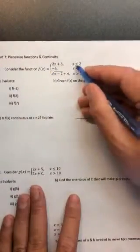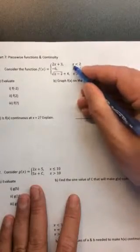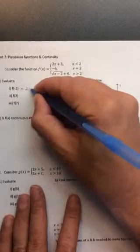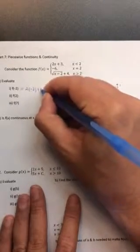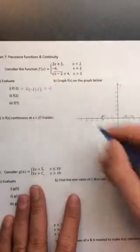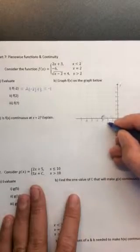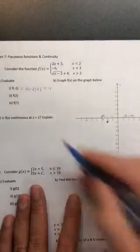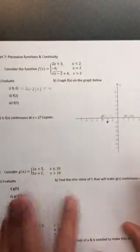When x is negative 2, x is less than 2 because negative 2 is less than 2. And so f of negative 2 is 2 times negative 2 plus 3, which is negative 1. So when x is negative 2, y is negative 1, and it's because we're on this graph right here. I'm going to let you do f of 2 and f of 7 on your own.